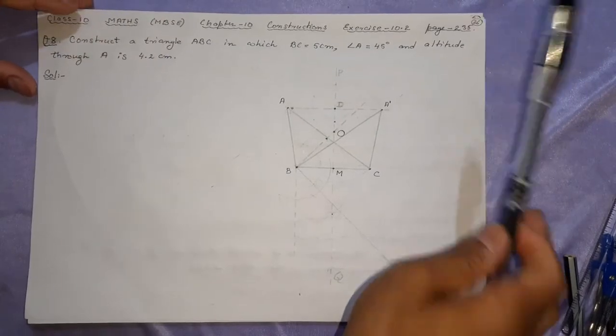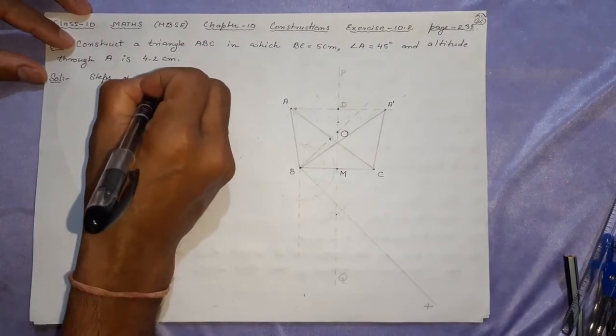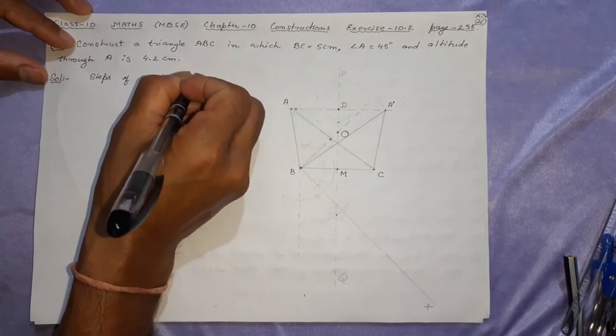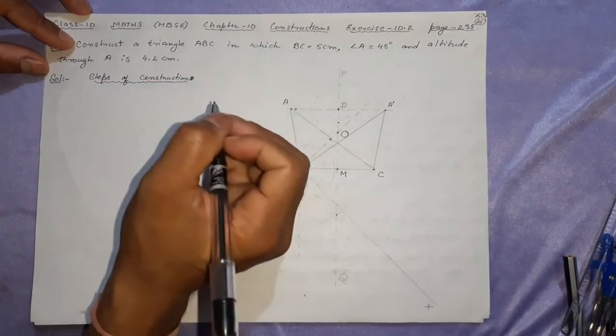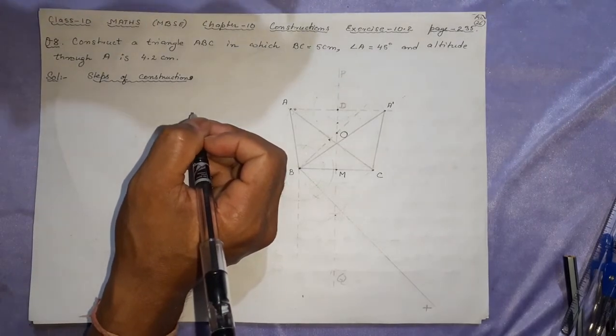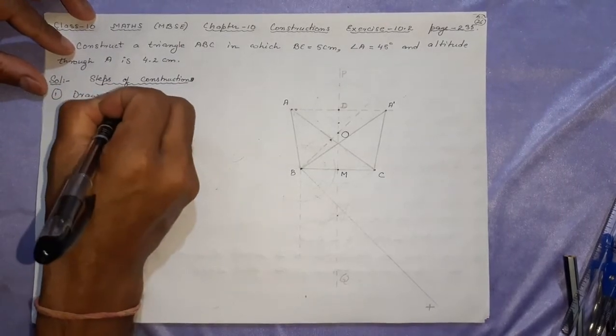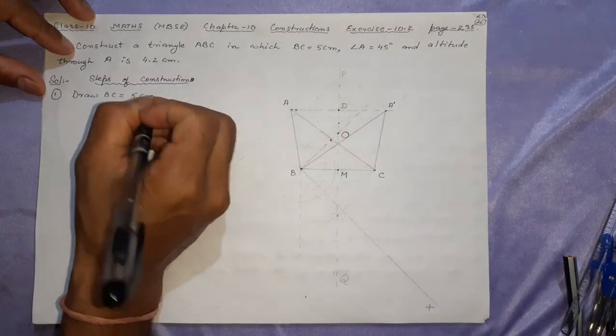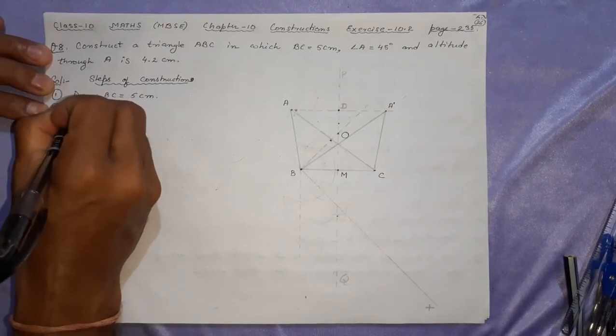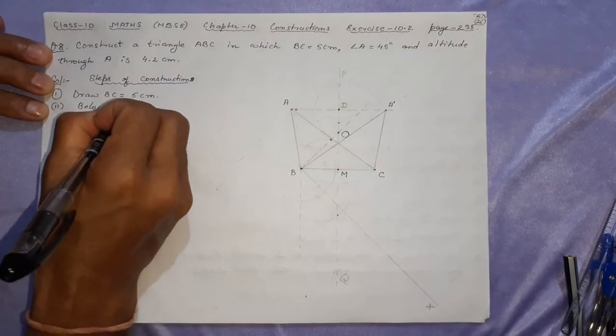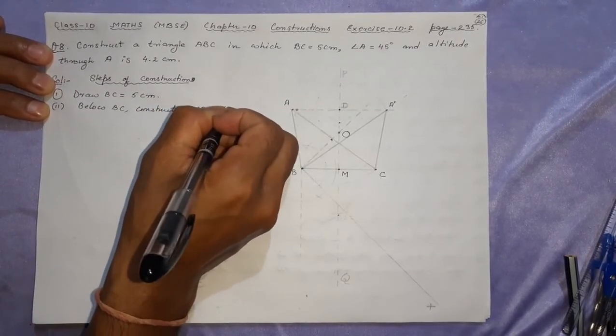So now we are going to write the steps of constructions. Steps of constructions. Let us start first. What we did in the first one, number one: Draw B C equal to 5 centimeter. That was the first step. Second: Below B C, construct angle C B X equal to 45 degree. Done.